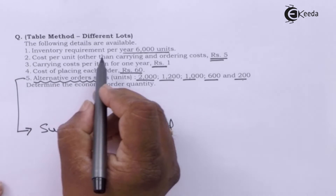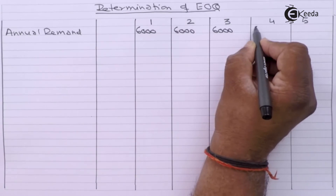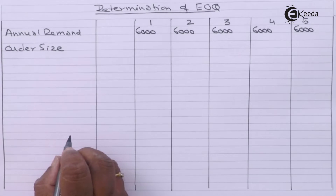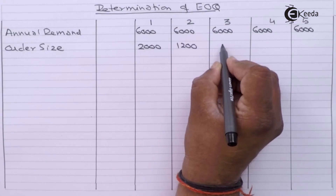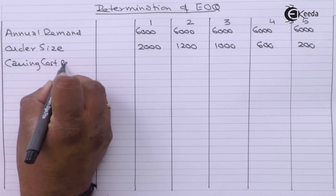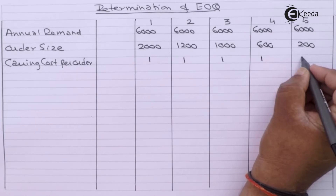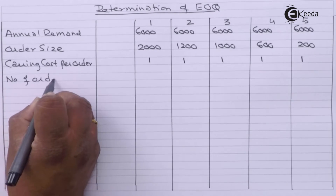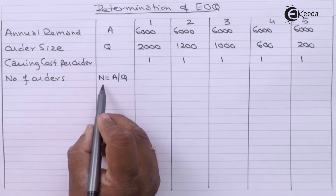Annual demand is given as 6,000 units. We can consider different order sizes: 2,000, 1,200, 1,000, 600, and 200. Carrying cost per item for one year is Rs. 1, and cost of placing each order is Rs. 60. We will find out the number of orders — if annual demand is A and order size is Q, number of orders will be A divided by Q.